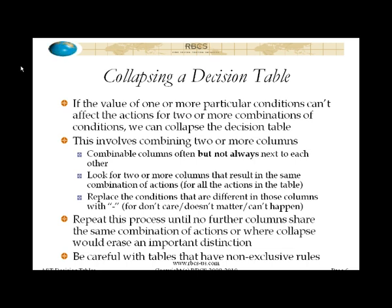Decision tables often have the property where combinable columns will be right next to each other. So you start by looking at adjacent columns and asking: does one of the conditions here not actually affect the action to be taken? If so, can you squeeze those two columns together, replacing the condition or conditions that don't matter with a dash and keeping the conditions that do matter? You methodically walk through the table trying to collapse columns, continuing this process until no columns share any combination of actions in common — at which point there could be no further collapse.